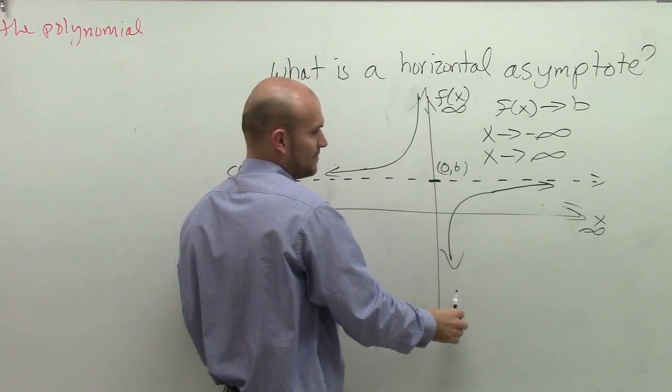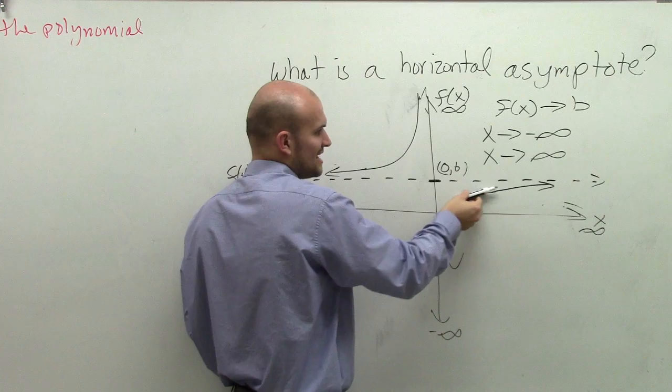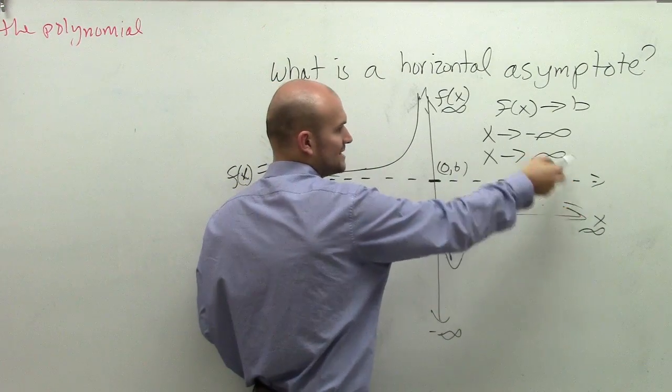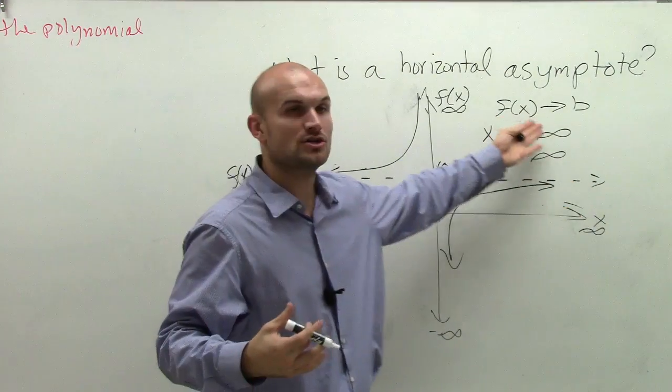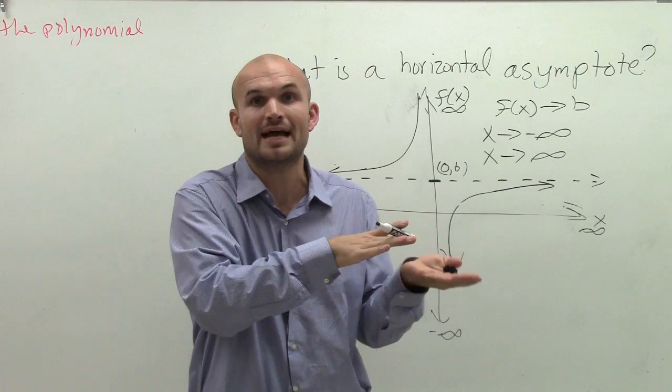Then my graph from below, as I keep getting closer to b, it turns and starts approaching positive infinity. So as my function approaches b, if they both go to infinity or both go to negative infinity,